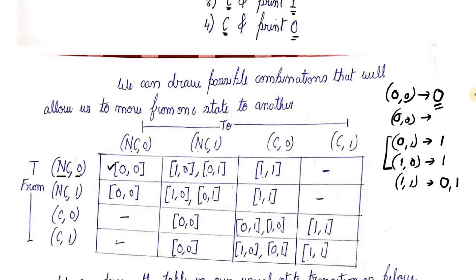Something happened in the previous step which led to no carry and the output was 0 — that's the only possible thing. Then we can either remain in this state by getting xt as 0,0, or go to no carry,1 by getting 0,1 or 1,0, or get to carry,0 if we get 1,1 — output is 0 but carry is 1. There is no way to get carry 1 and print 1 when starting from no carry.